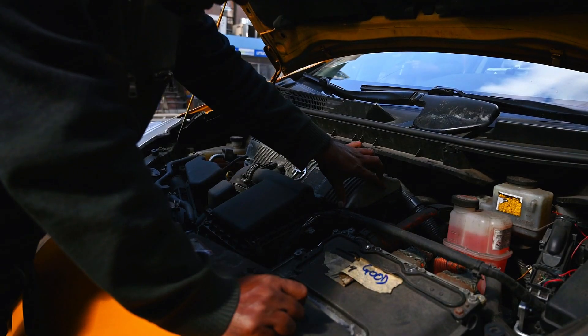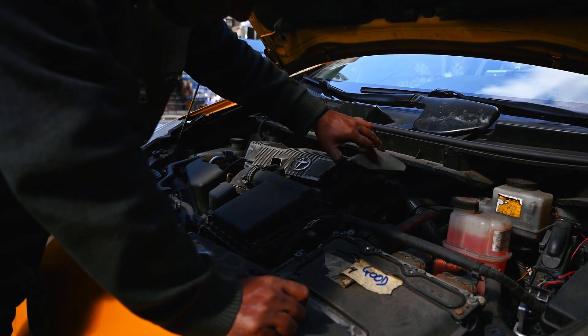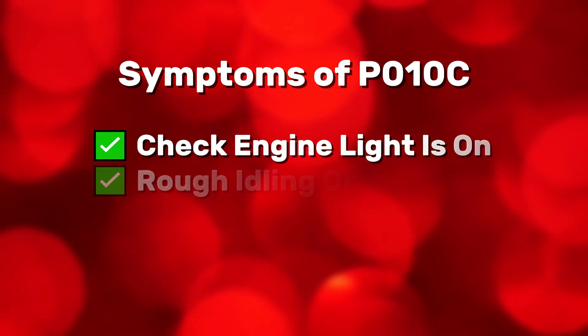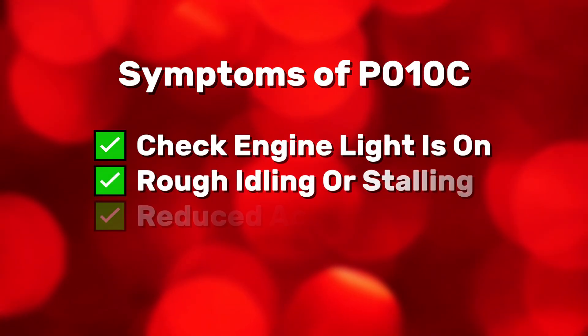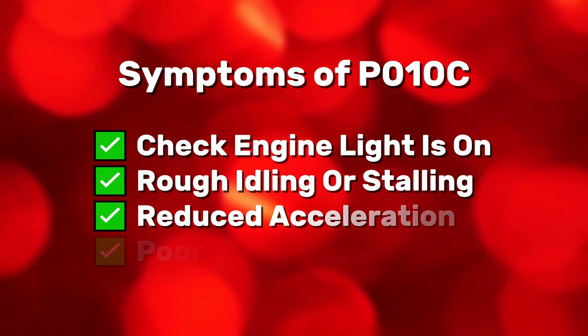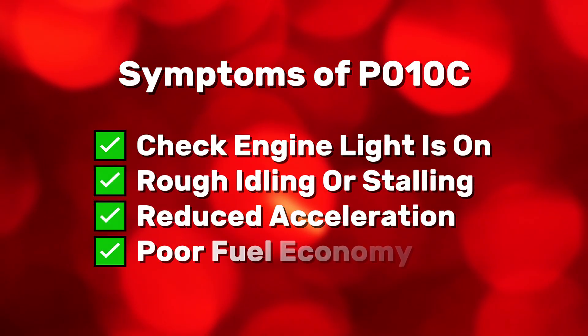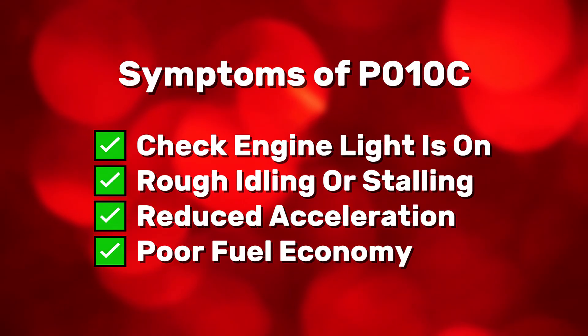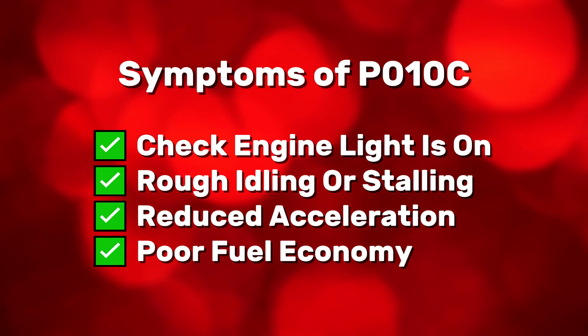If your car has the P010D code, you might notice the check engine light is on, rough idling or stalling, reduced acceleration, or poor fuel economy. If you're experiencing any of these, it's time to diagnose the issue.